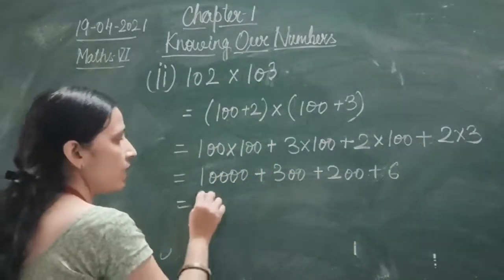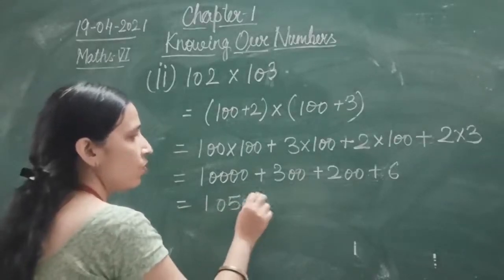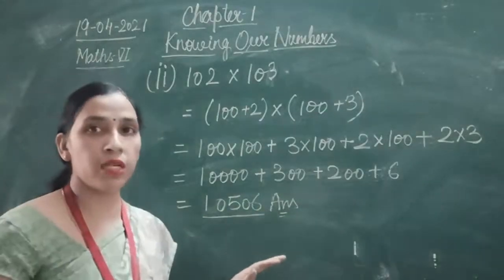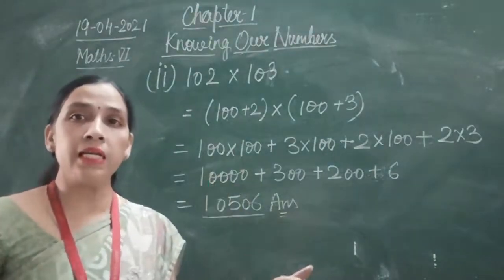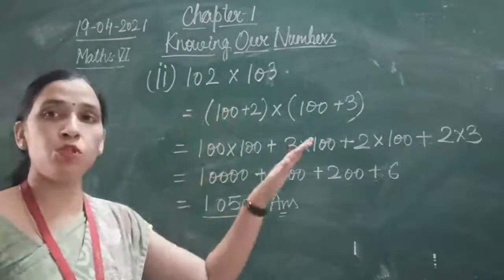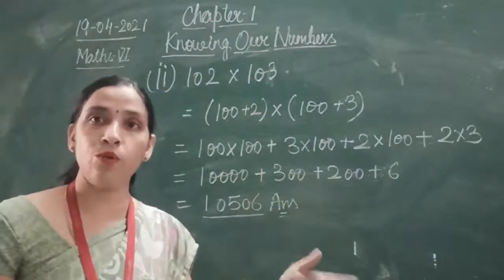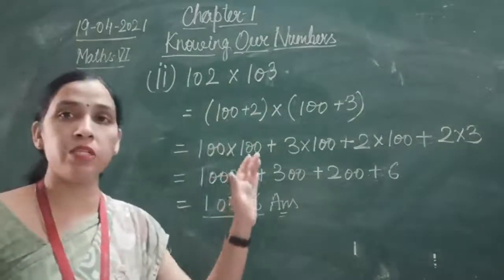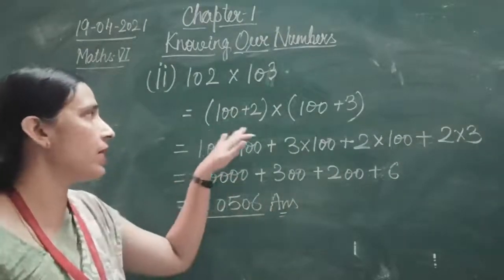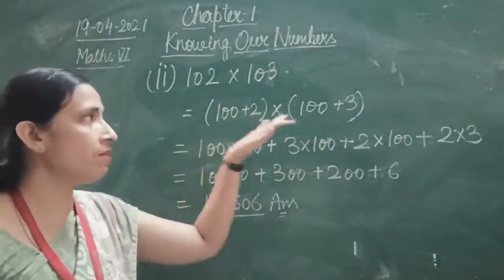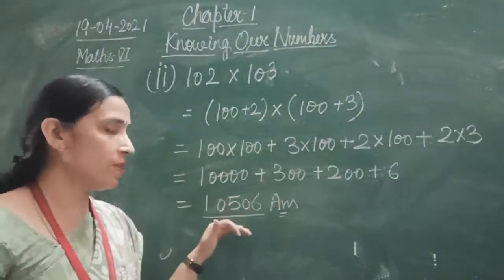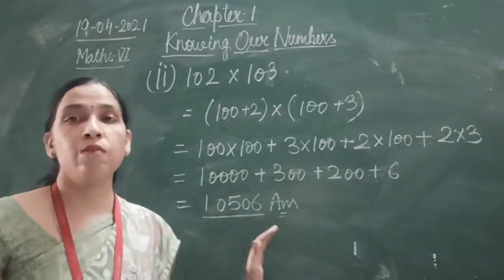So that will become 10,000 plus 300 plus 200 plus 6. What is the total here? That gives 10,506, which is your answer. Expanding brackets means you write a given number in the form of 100 plus 2, or 10 plus 4, and then you can do that multiplication. They multiply with each other and then we do the addition.